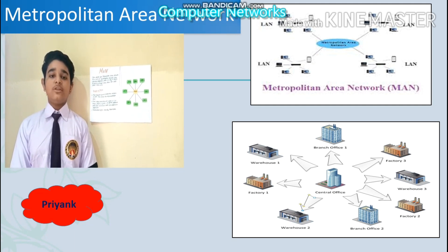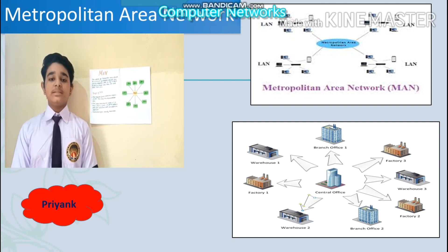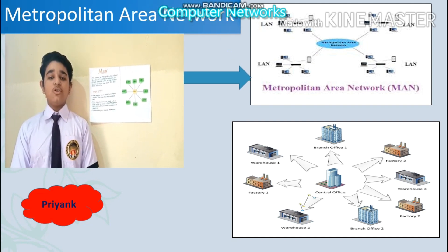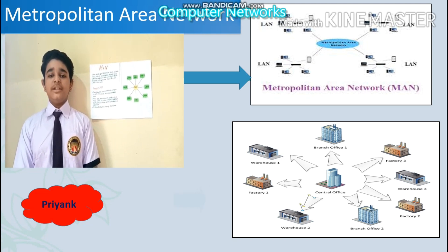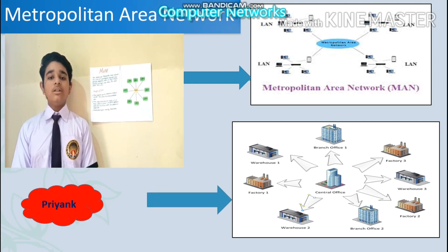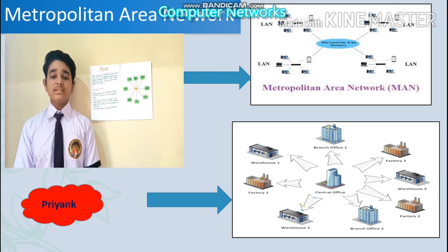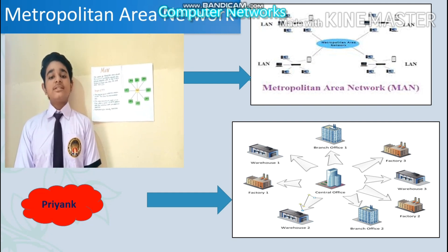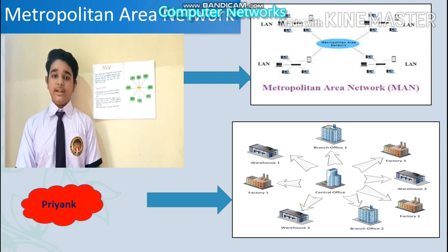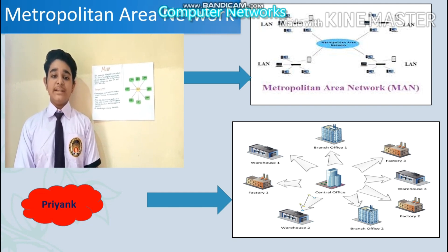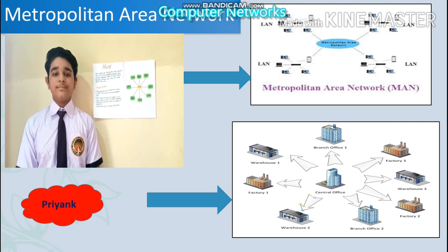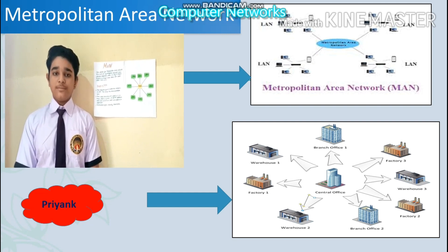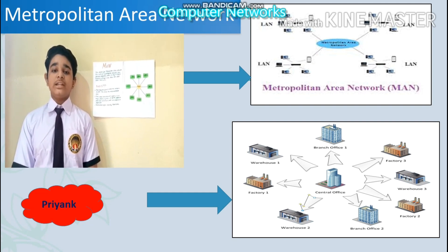As you can see, there are two pictures displayed on your screen. The first picture shows that MAN is a collection of LANs connected with each other to share information. The second picture shows that from a central office, all components of an industry like warehouses, factories, branch offices, etc. are connected to share information. Benefits of MAN: it offers higher speed than LAN at about 5 to 10 Mbps, uses fewer components compared to WAN which reduces implementation cost, and also offers higher security compared to WAN. Thank you.